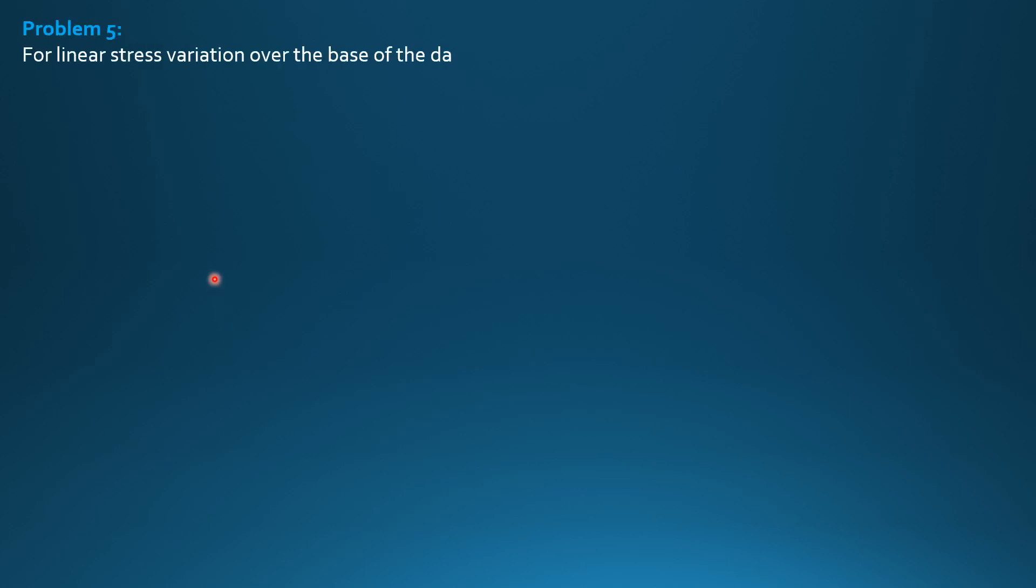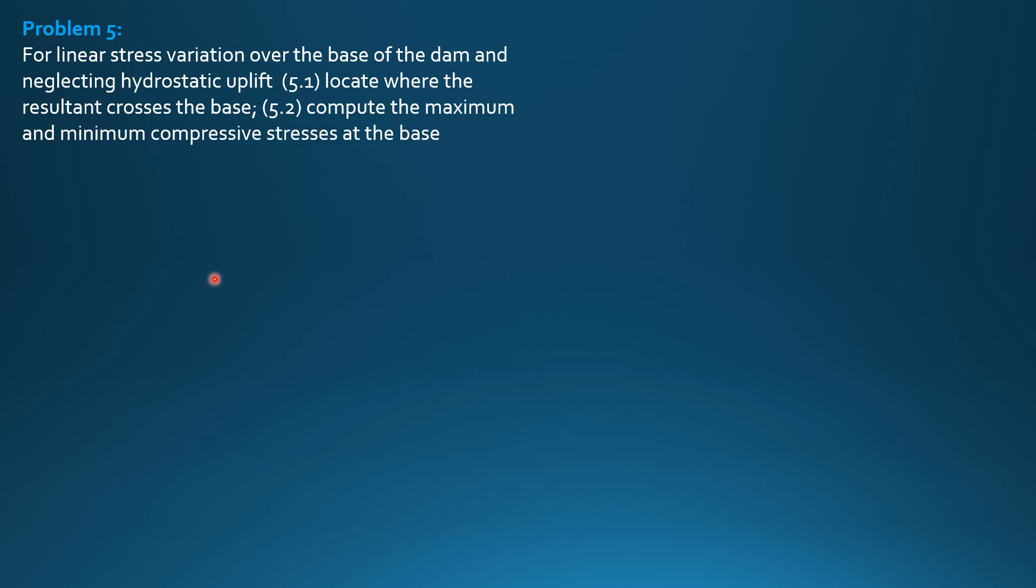For linear stress variation over the base of the dam and neglecting hydrostatic uplift, locate where the resultant crosses the base, so that's x from the toe. Compute the maximum and minimum compressive stresses at the base. Rework the above problem considering hydrostatic uplift that varies from 20 meters at the heel to 0 at the toe of the dam.